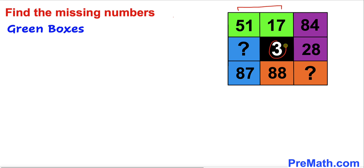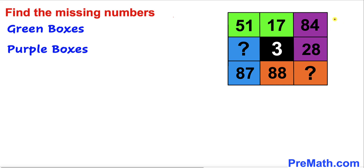We can see that if we multiply these two adjacent boxes — 3 times 17 — our answer is going to be 51. So in other words, 3 times 17 is going to give us 51. Now let's focus on these purple boxes.